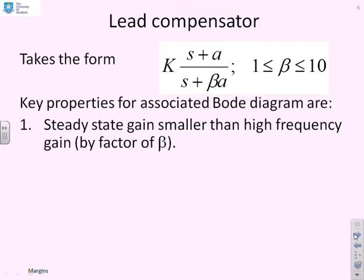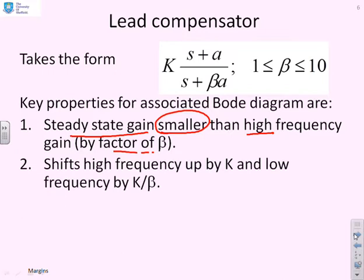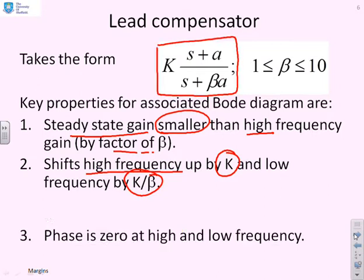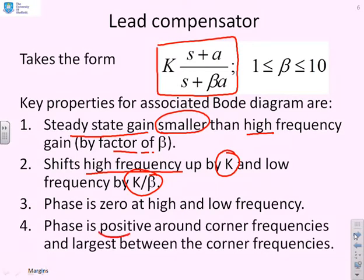Let's summarise the key properties of the lead compensator. The steady-state gain is smaller than the high frequency gain by a factor of beta — at high frequency the gain is k, and at low frequency the gain is k over beta. In terms of the phase, the phase is 0 at high and low frequency, and the phase is positive around the corner frequencies, and largest between the corner frequencies.